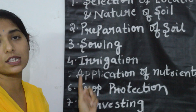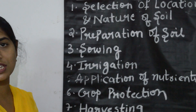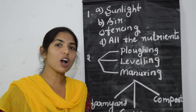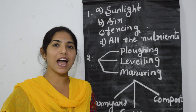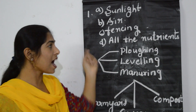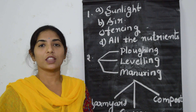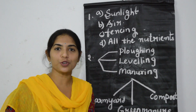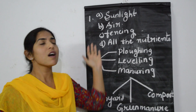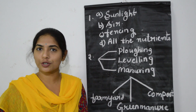Each of these steps is equally important to produce a good crop. As we all know, plants need proper sunlight, air and nutrients for their growth. So the farmer has to take proper steps to ensure all these requirements for the crop to grow.